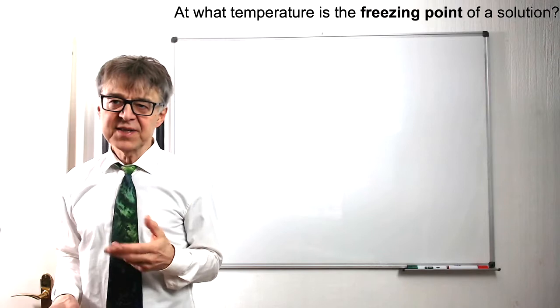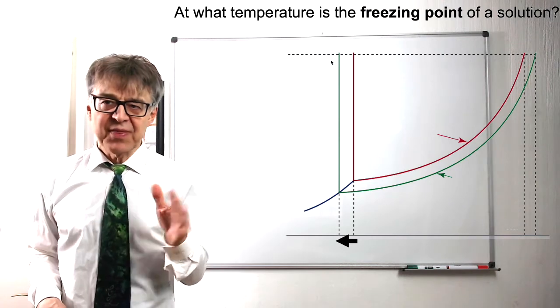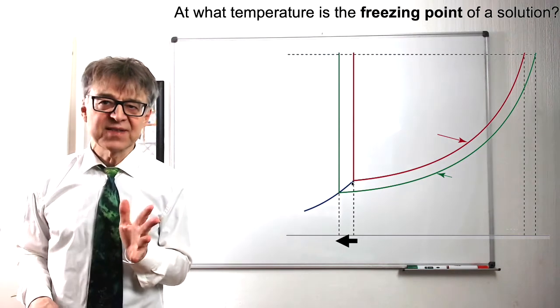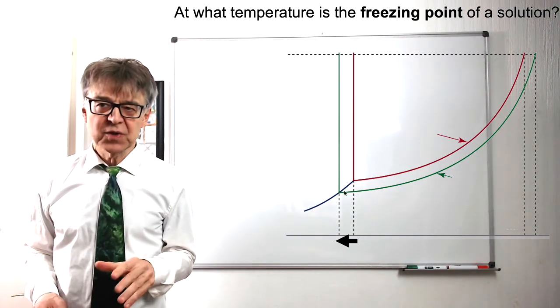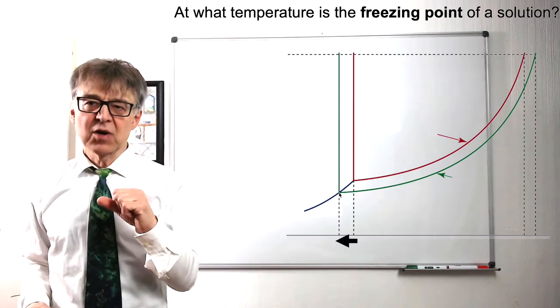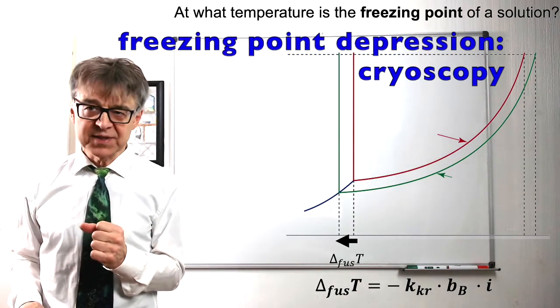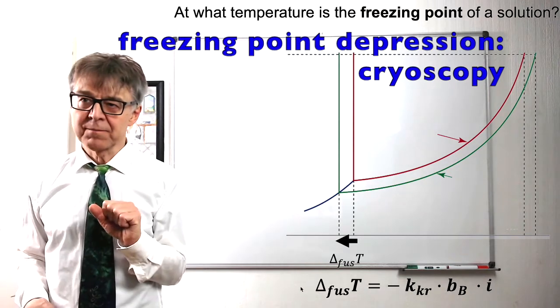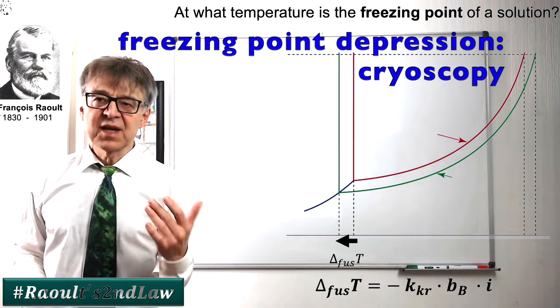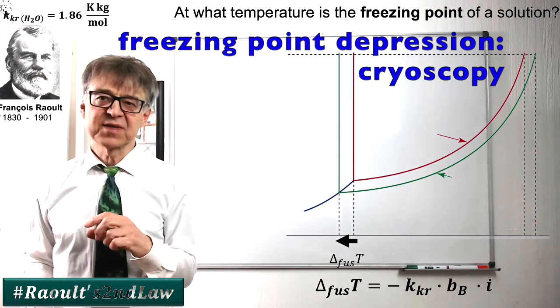A solvent freezes when liquid and solid have the same vapor pressure, that is, at the temperature where the vapor pressure curve and the sublimation pressure curve intersect. In the case of a solution, this intersection is shifted to lower temperatures. There is a so-called freezing point depression of a solution compared to the solvent, expressed by this equation, also known as Raoult's second law. The constant K sub Cr is the cryoscopic constant, another characteristic for every solvent.